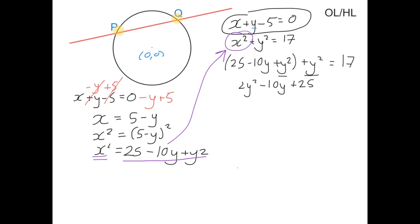Adding our y² together, we get 2y² - 10y + 25. Now, if I subtract 17 from both sides to get everything to one side, it cancels on the right leaving 0, but I get 25 - 17, which is +8. We can simplify by dividing everything by 2, and we get y² - 5y + 4 = 0.